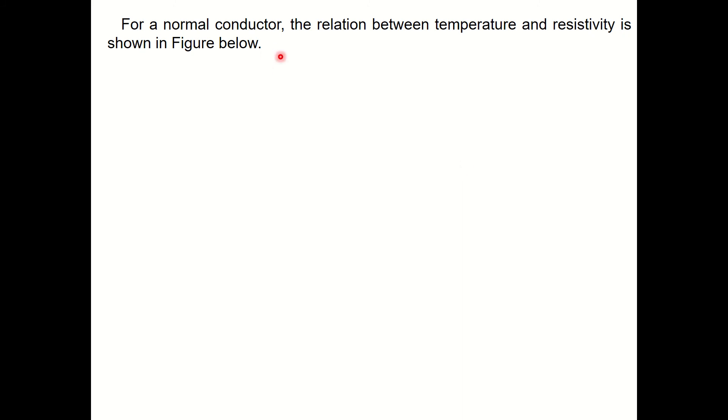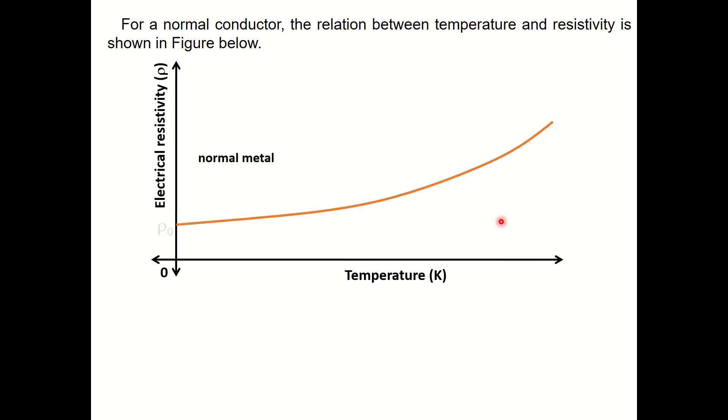Generally for a normal conductor, the relationship between temperature and resistivity can be shown like this. If we plot a graph of electrical resistivity versus temperature, we can see that as the temperature increases the electrical resistivity of metal increases. This happens due to the increase in the lattice vibration which opposes the flow of current through it.